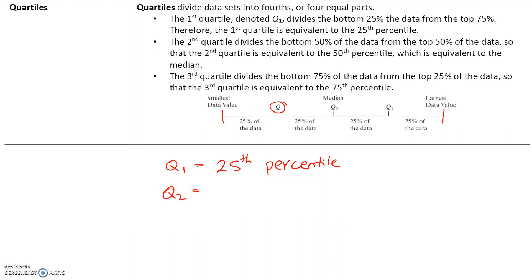Q2 divides the bottom 50% of data from the top 50% of data. So the second quartile, or Q2, is equal to the 50th percentile, meaning Q2 is larger than 50% of the data values. We'll talk more about this in a couple of sections, but the second quartile, Q2, is also called the median. The median separates the lower half of data values from the upper half of the data values.